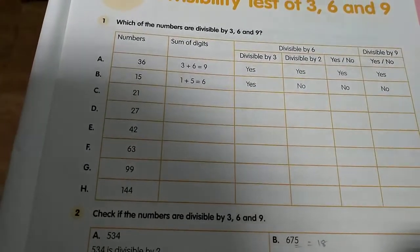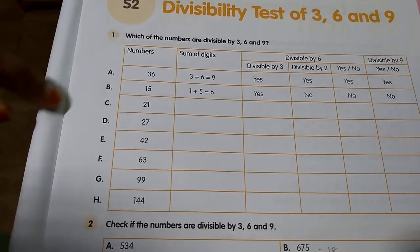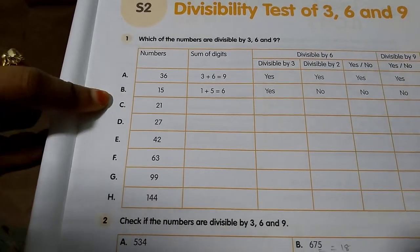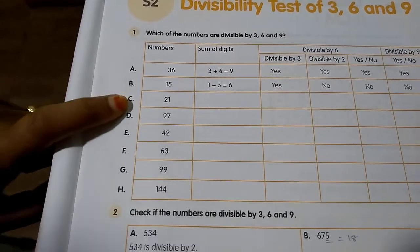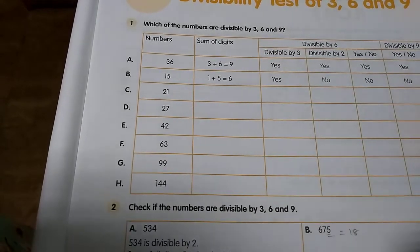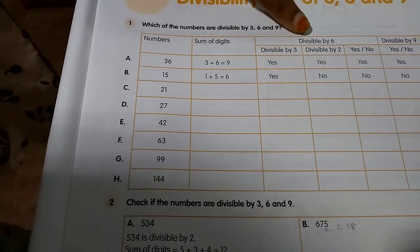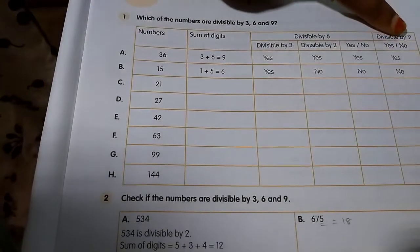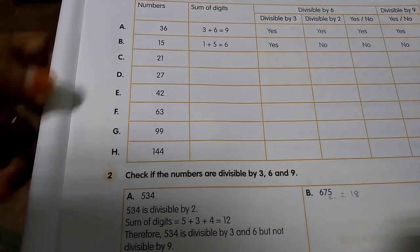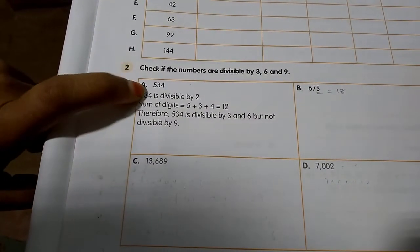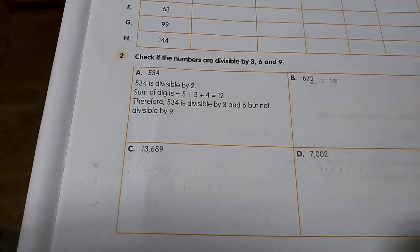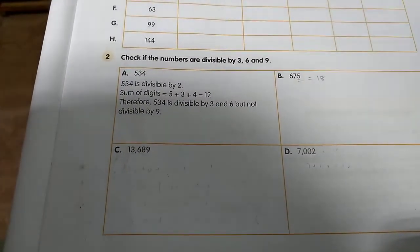Open your workbooks, children — page number 15, section S2: Divisibility Test for 3, 6, and 9. Look at the first question: which of the numbers are divisible by 3, 6, and 9? The first and second examples are done for you. Complete the third one — for example, 21. First find the sum of the digits, then check divisibility by 2 for the rule of 6, and then check for 9. The second question gives 534 — check if it is divisible by 3, 6, and 9. Complete sections A, B, C, and D.